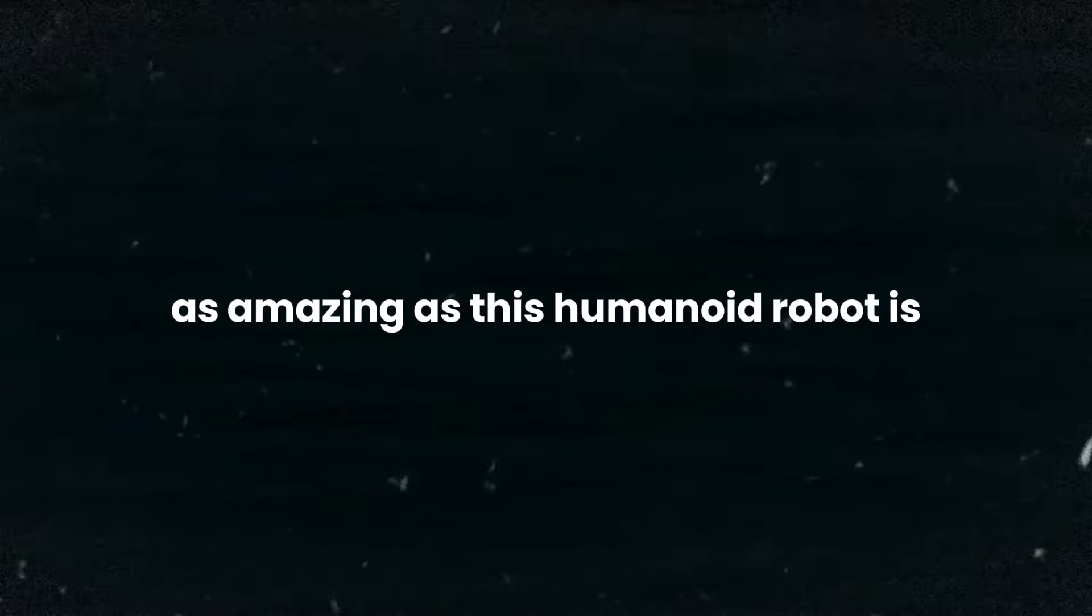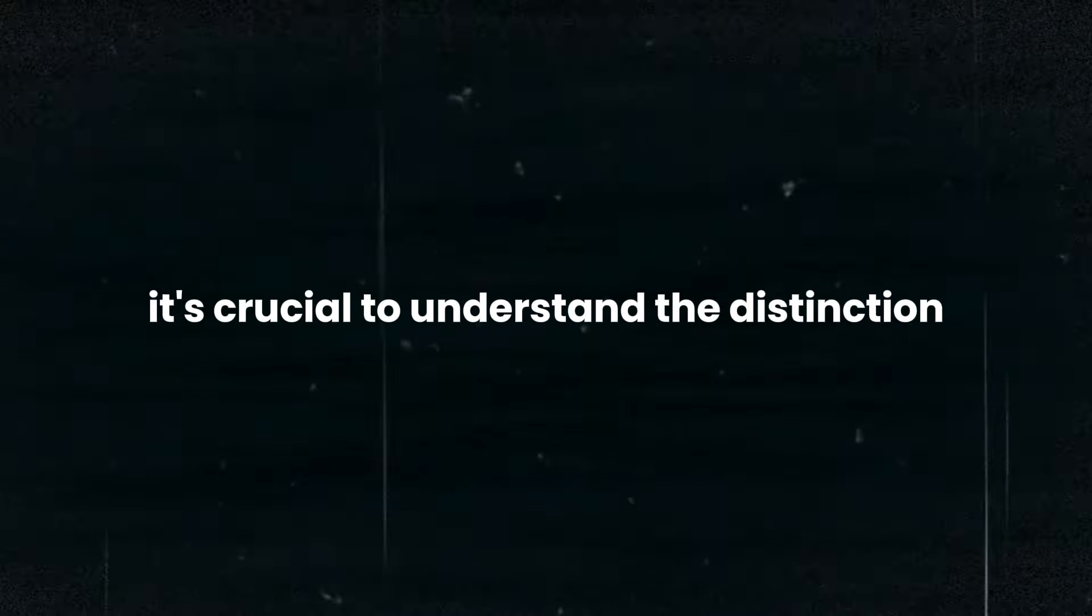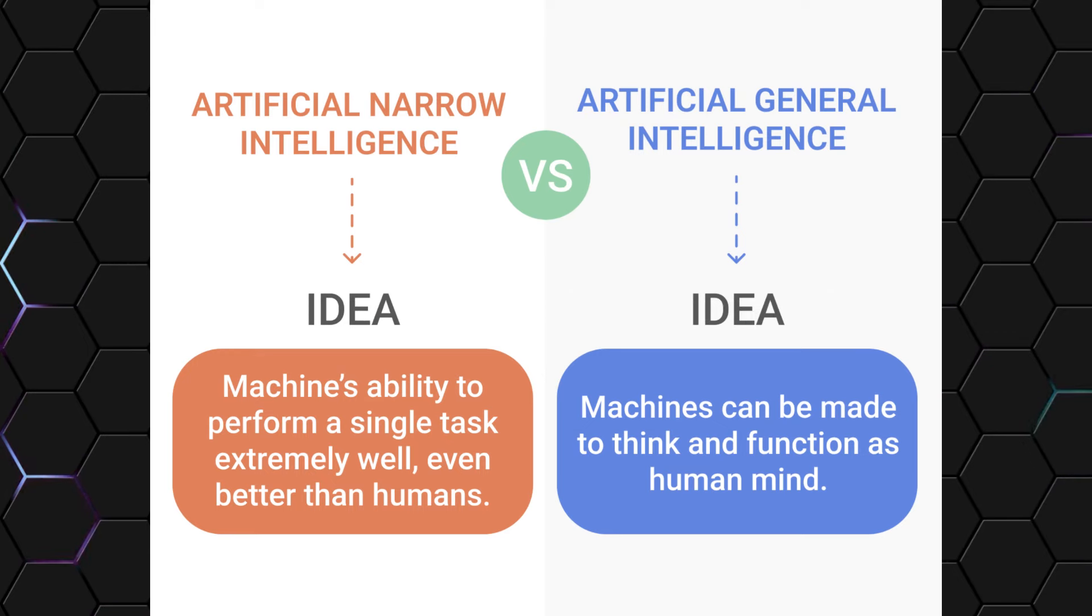And as amazing as this humanoid robot is, it's crucial to understand the distinction between the narrow AI that powers it and the concept of AGI. Narrow AI, like the one demonstrated by this robot, is designed to excel at specific tasks within a particular domain. It can perform these tasks with incredible proficiency, often surpassing human capabilities in terms of speed, accuracy and endurance.